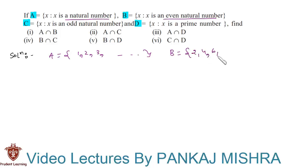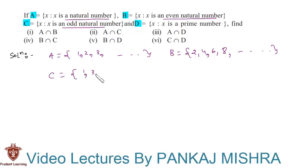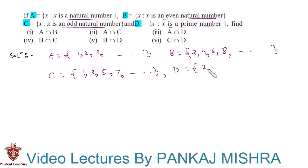C is equal to the set of x such that x is an odd natural number, so its elements are 1, 3, 5, 7, and so on. Finally, D is equal to the set of x such that x is a prime number, so its elements are 2, 3, 5, 7, and so on.